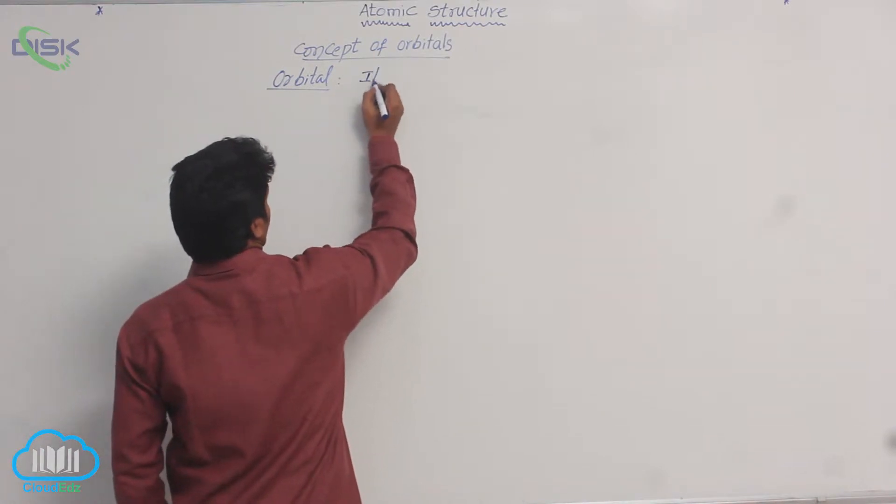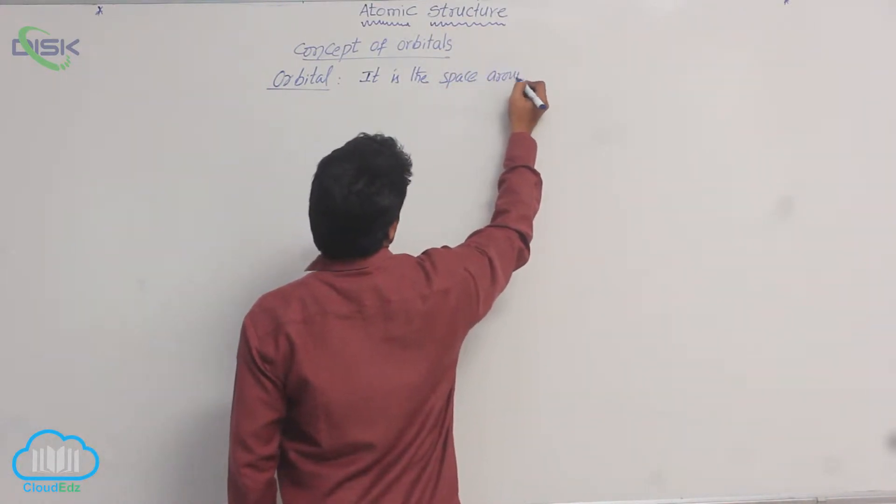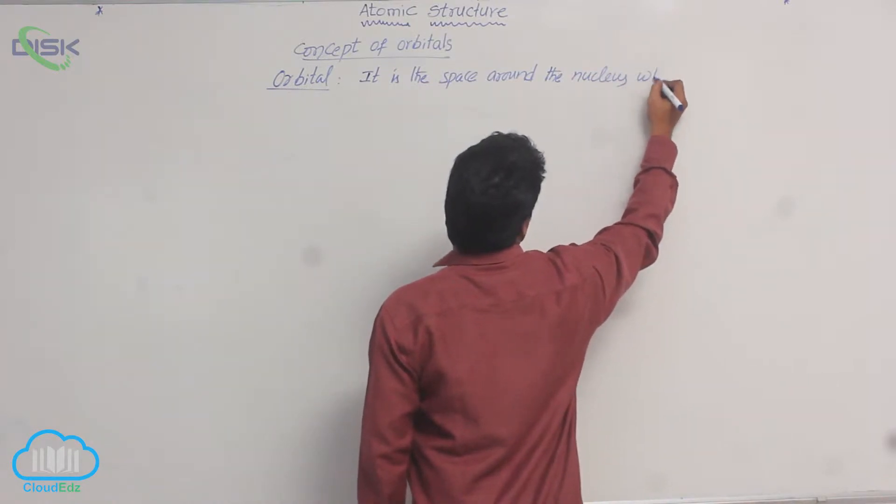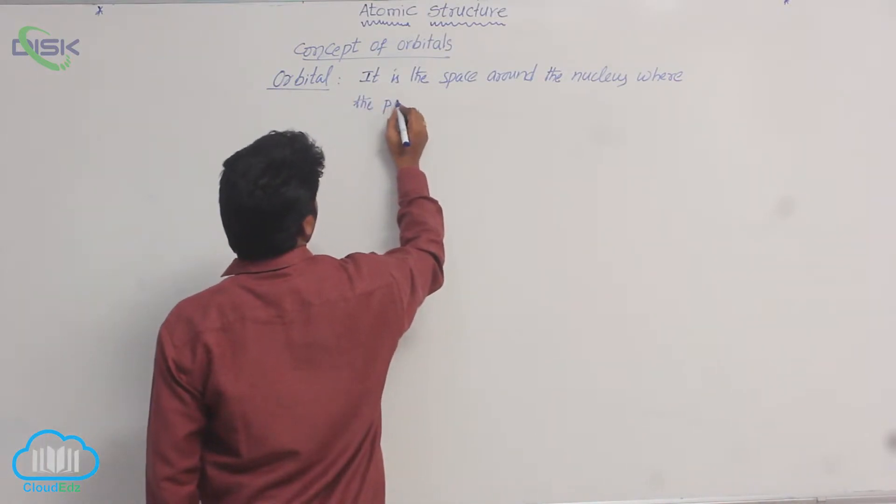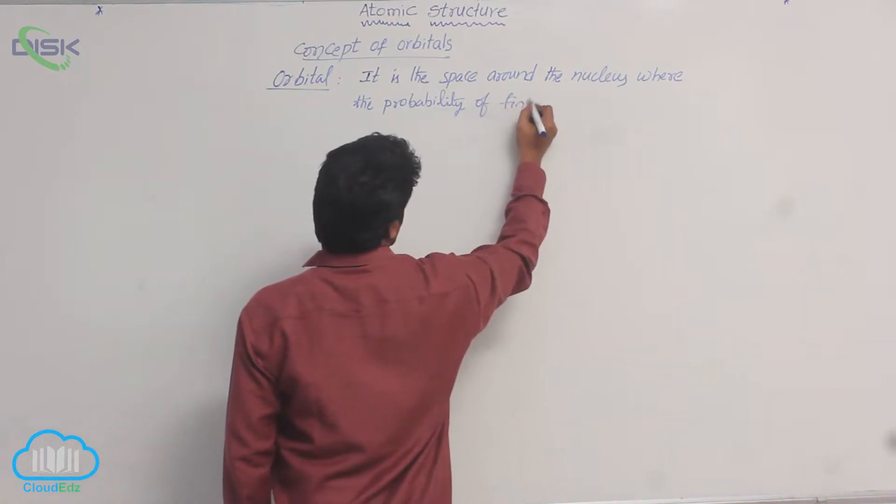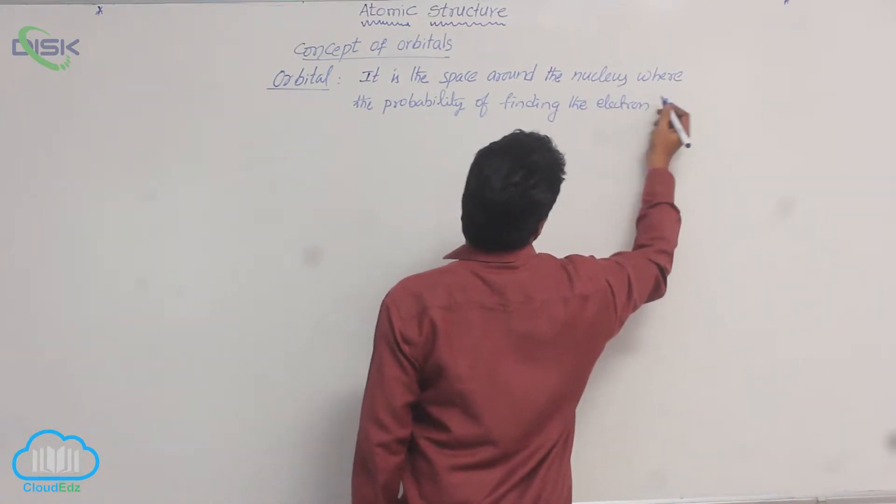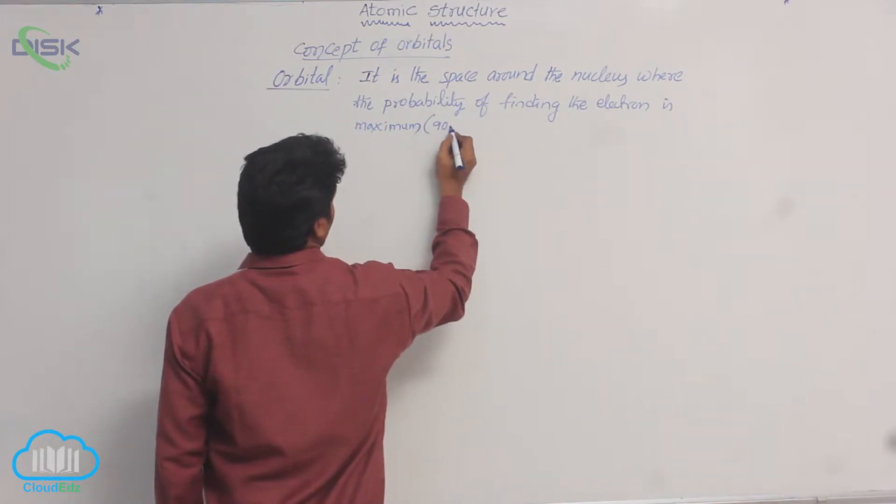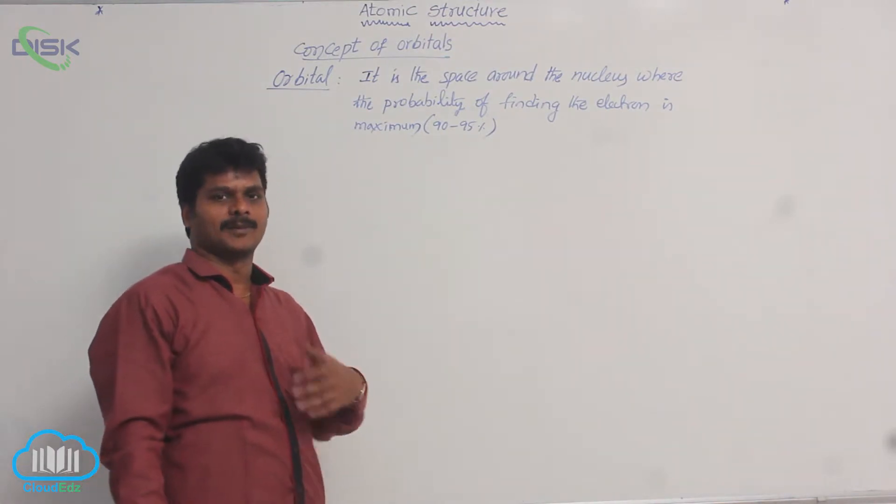It is the space around the nucleus where the probability of finding the electron is maximum. Maximum in the sense of 90 to 95 percent only. We cannot determine the 100 percent probability of electron.